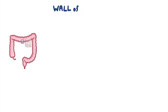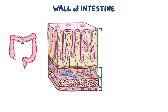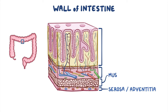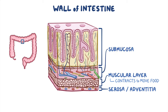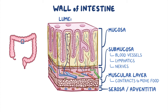Now let's zoom into the wall of the intestine, which is made up of four layers. The outermost layer is called the serosa, or adventitia. Next is the muscular layer, which contracts to move food through the bowel. After that is the submucosa, which consists of a dense layer of tissue that contains blood vessels, lymphatics, and nerves. And finally, there's the inner lining of the intestine called the mucosa, which surrounds the lumen of the gastrointestinal tract and comes into direct contact with digested food.